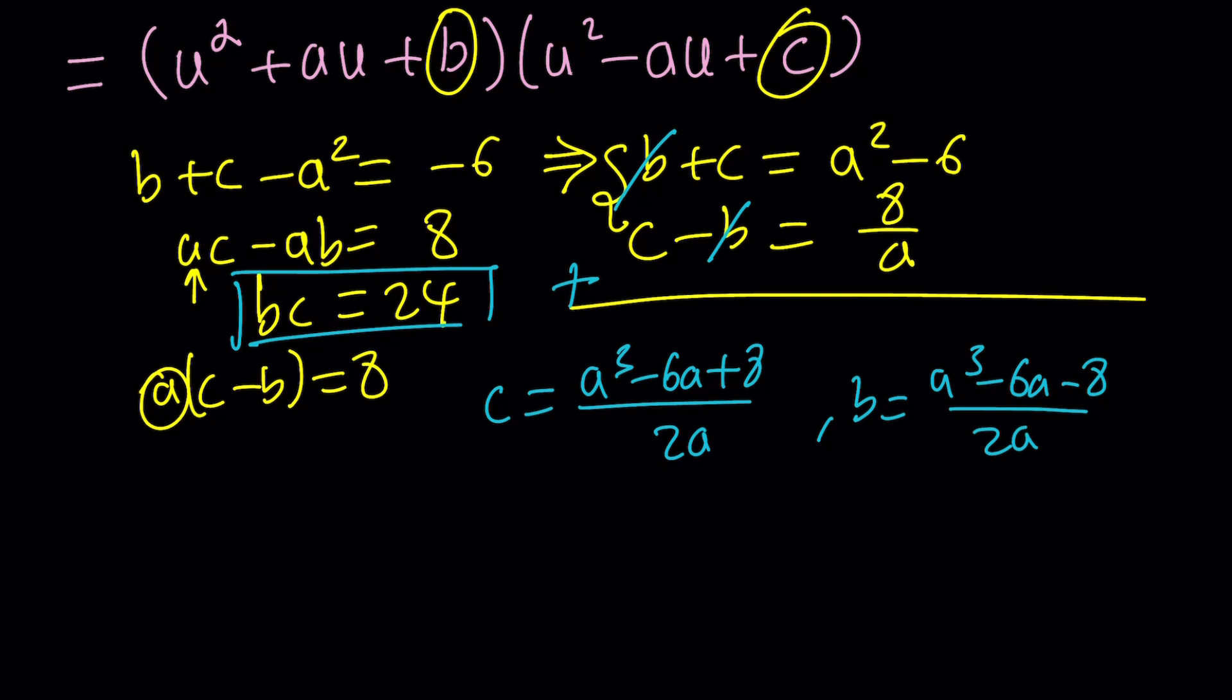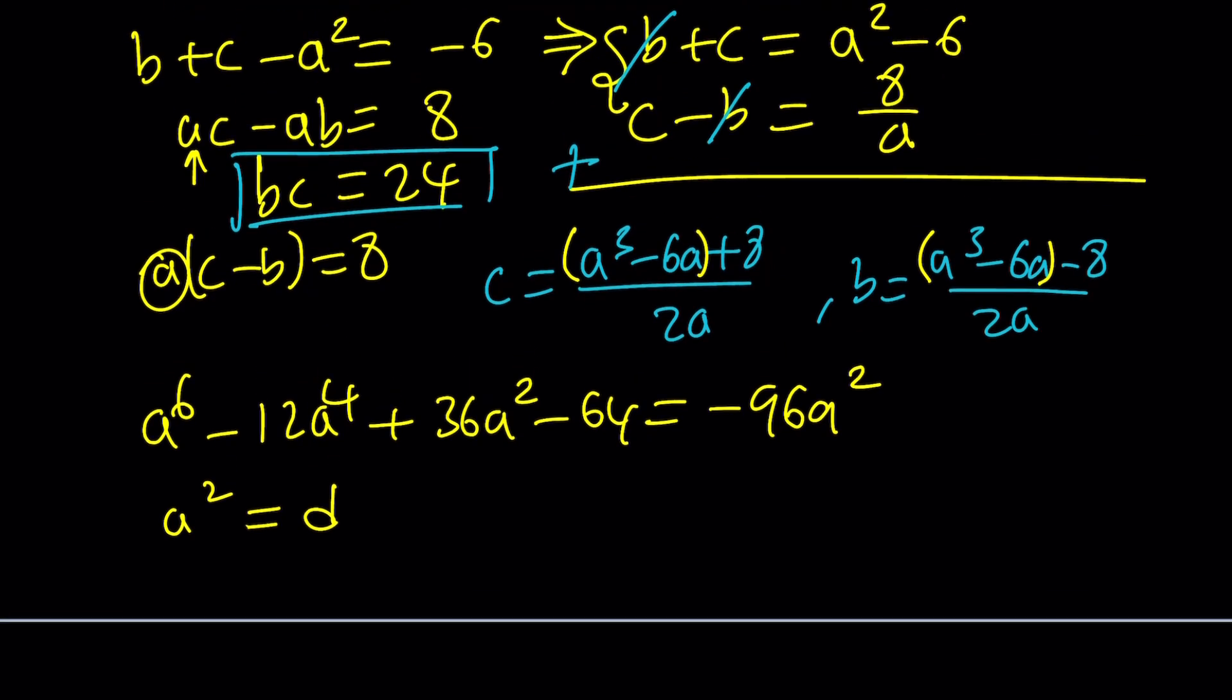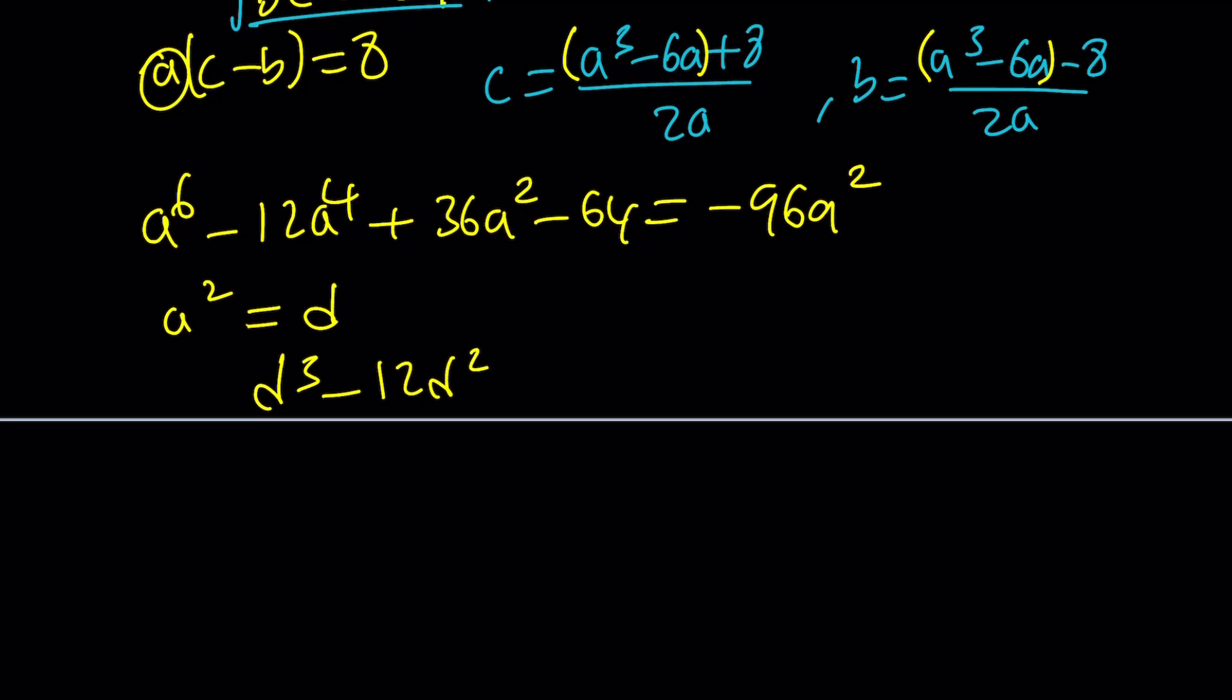Upon division by 2, you're going to get the values of b and c in terms of a: c equals a cubed minus 6a plus 8 divided by 2a, and b equals a cubed minus 6a minus 8 divided by 2a. Then use these in the third equation, bc equals 24. This looks complicated, but one thing that makes it easier is these two are kind of conjugates. They make up difference of two squares when you multiply them. That's going to be a lot of work and you're going to get a 6 degree hexic equation, but then you can use substitution.